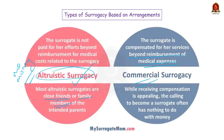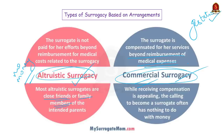In contrast, if you are working with a surrogacy professional to locate a surrogate, then it is most likely commercial surrogacy. The important takeaway is that in India, gestational surrogacy is the only type permitted, and commercial surrogacy is banned. So in India, you can legally commission surrogacy only through altruistic gestational surrogacy.